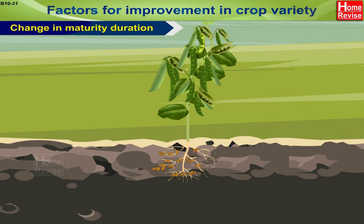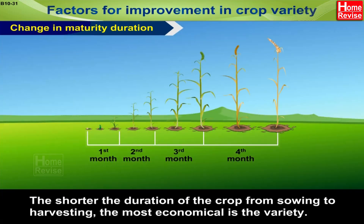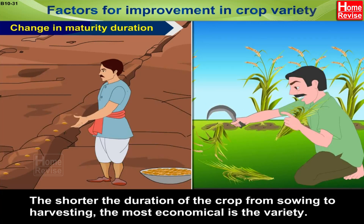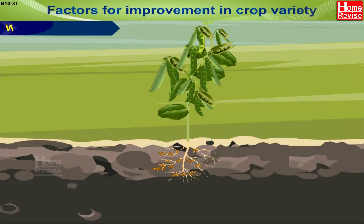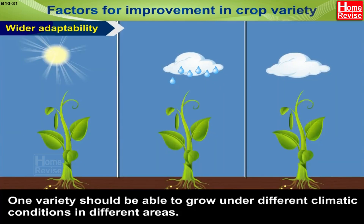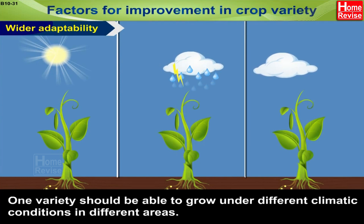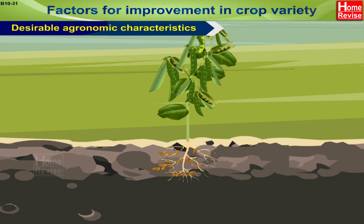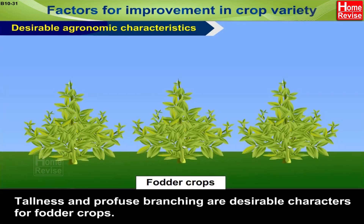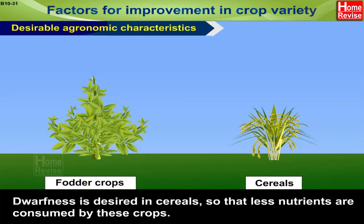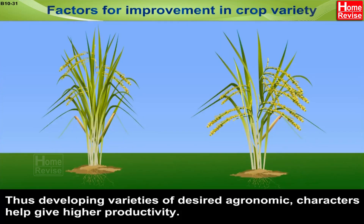Change in maturity duration: the shorter the duration of the crop from sowing to harvesting, the more economical the variety, because farmers can keep growing new crops and earn more. Wider adaptability: one variety should be able to grow under different climatic conditions in different areas. Desirable agronomic characteristics: tallness and profuse branching are desirable for fodder crops, whereas dwarfness is desired in cereals so that less nutrients are consumed. Developing varieties of desired agronomic characters helps give higher productivity.